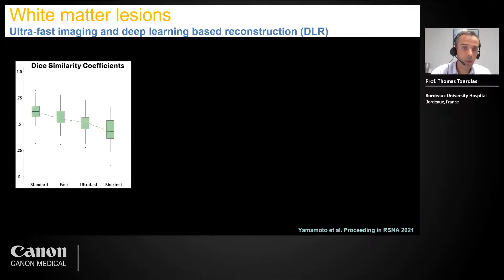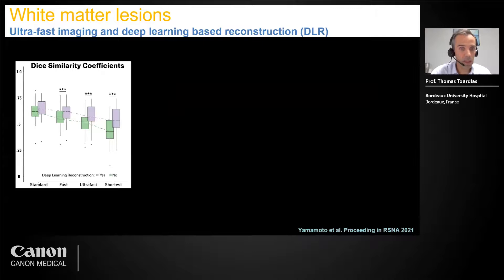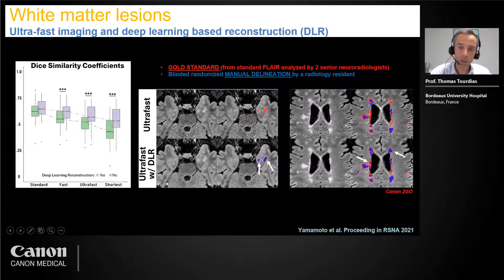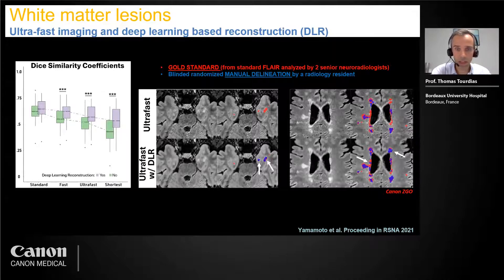More importantly, when you accelerate, the capability to depict lesions decreases, but this is improved with DLR up to the level of the standard FLAIR for the fast and ultra-fast sequence. For example, subtle lesions are missed by the reader looking at the ultra-fast sequence, but the reader captures this lesion when looking at the same sequence after DLR in random order. This strategy — fast imaging plus DLR — is already routine for some and is likely to be developed further with this kind of validation study.